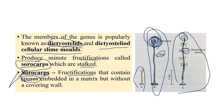In sporangia, sporangiospores are present enclosed tightly. When it comes to sorocarp, the fructification contains spores embedded in a matrix without any special covering wall. There is no special wall covering — the spores are simply packed inside the matrix.